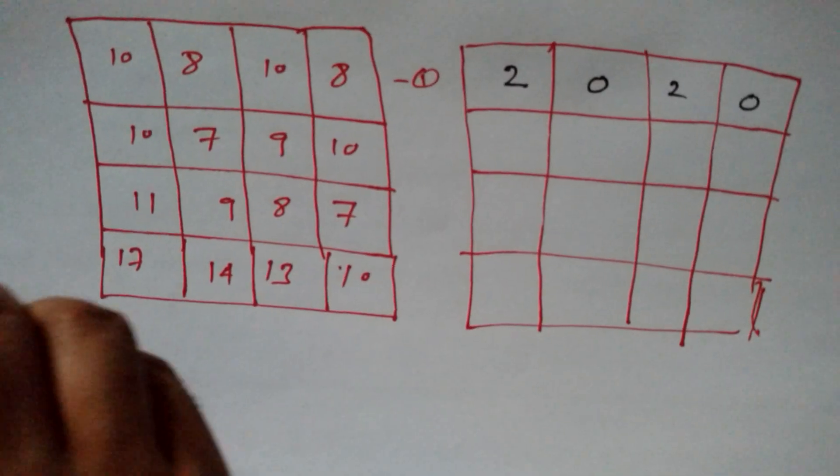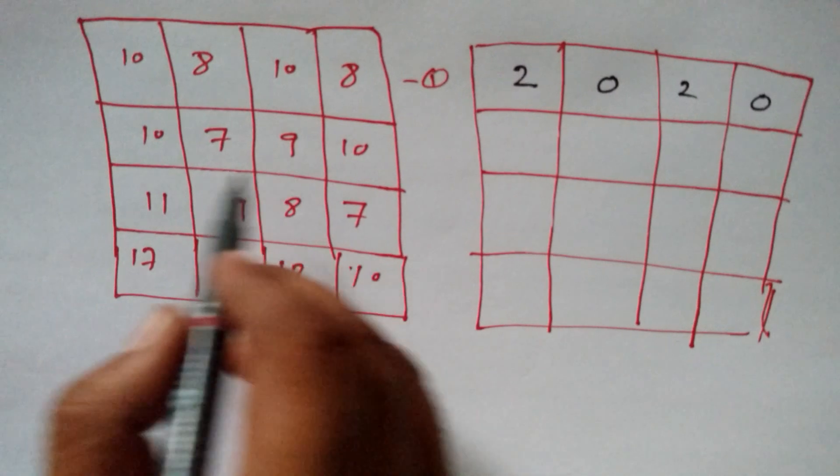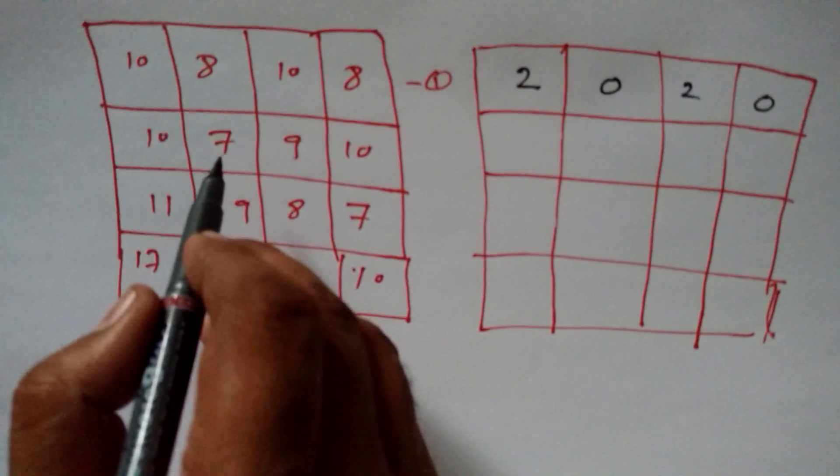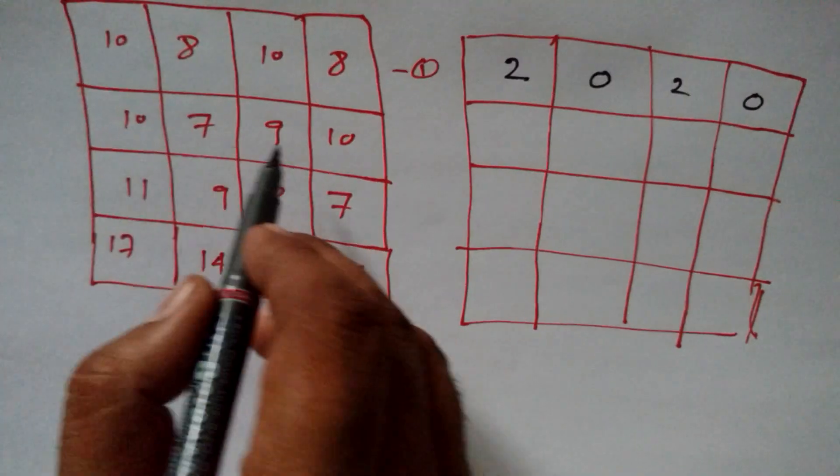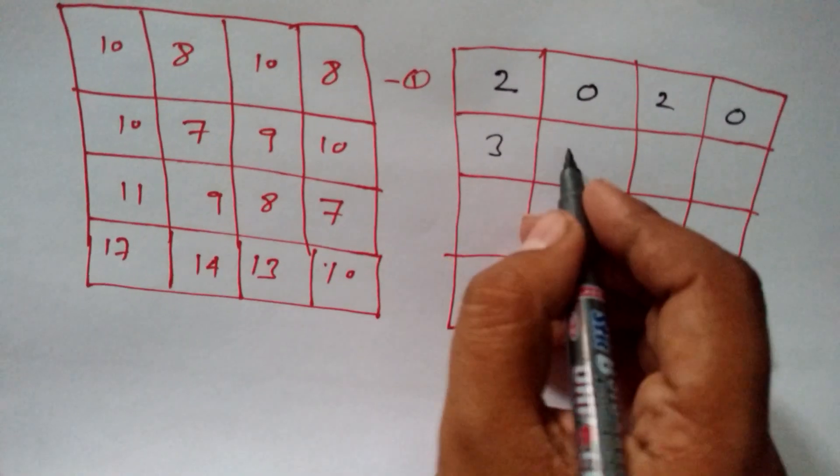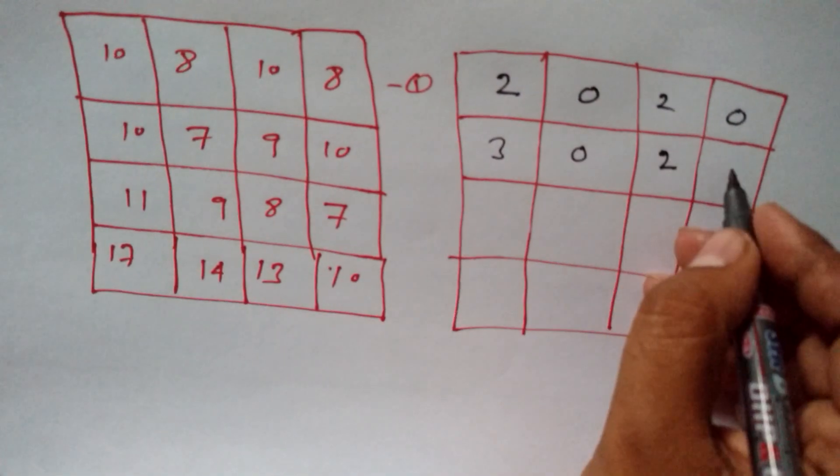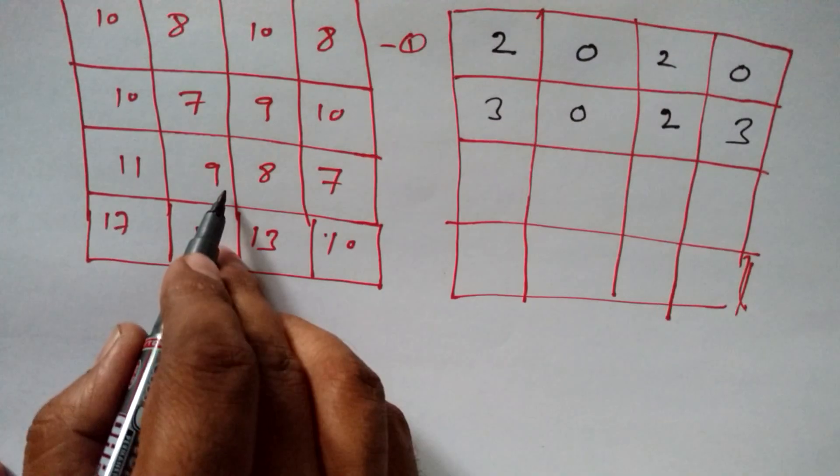The same step I'm going to repeat here too. So, from this row, the minimum value is 7. So, we have to subtract 7 from each of the element present in this row only. Here what we got 3 and then 0, then 2, then again 3.